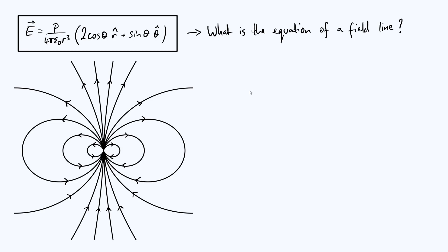We're going to consider a specific field line — let's look at this one over here — and think about two points on it. Let's put point one here and point two there. Our dipole is at the origin at the bottom of the diagram. I'll draw lines from the origin to those two points on the field line. We could put a little vector going between point one and point two, and split that vector into components along the radial and angular directions — the r and theta directions.